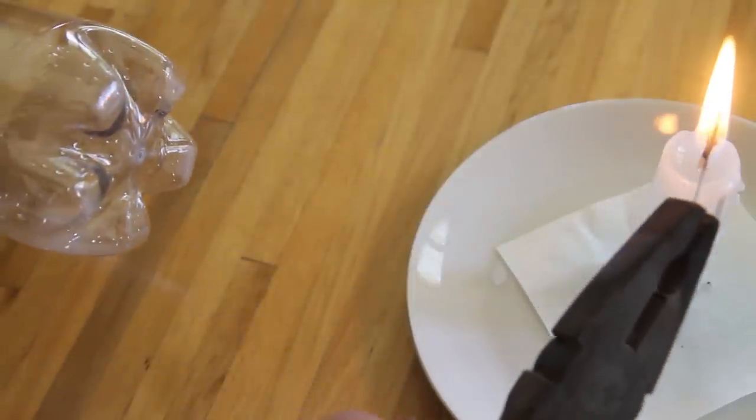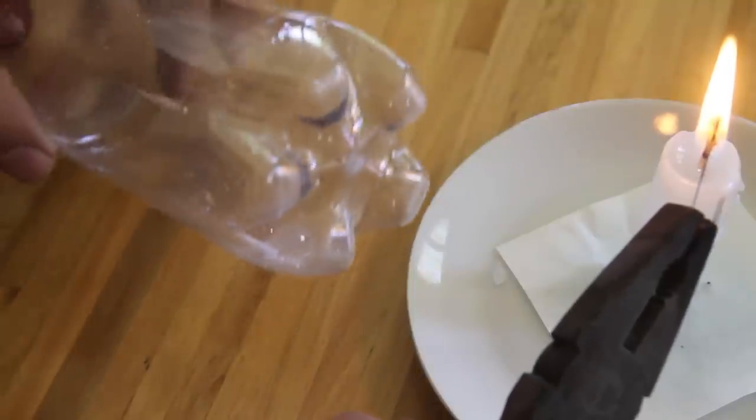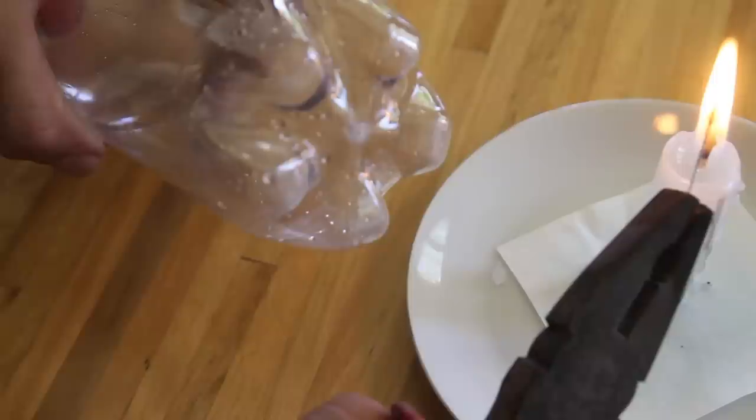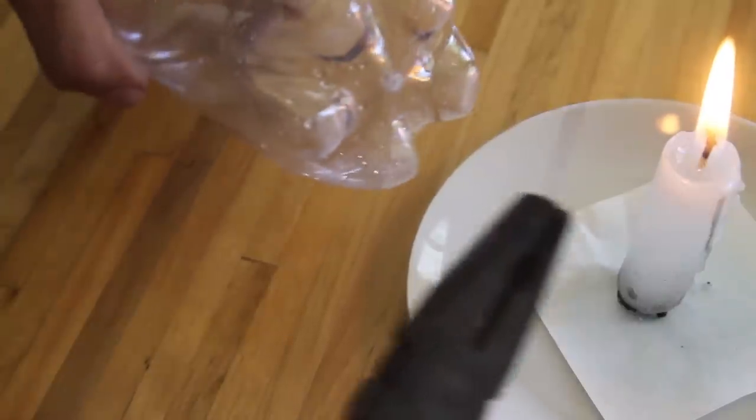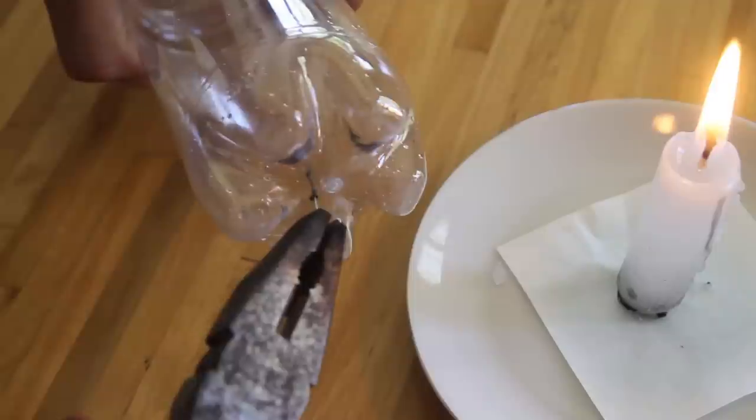First you can start by heating up a needle in a burning candle. This will make it very easy to puncture tiny holes in the bottom of the plastic bottle. You can make around four tiny holes in the bottom of the bottle.